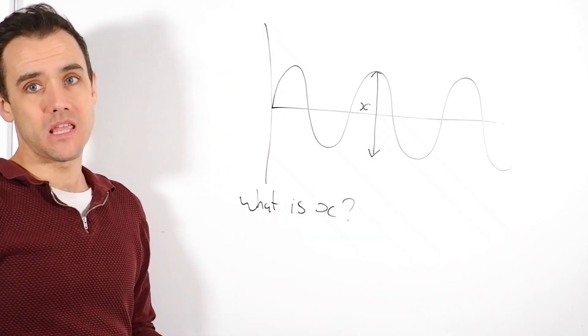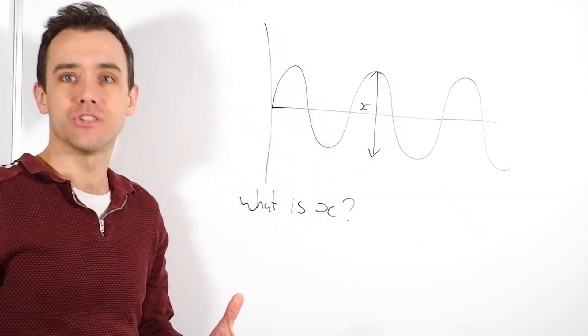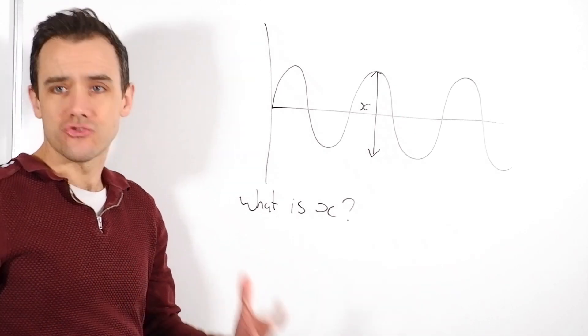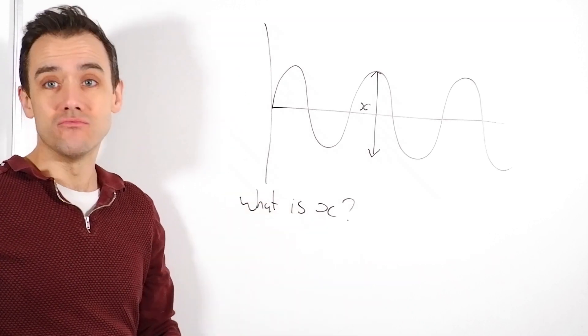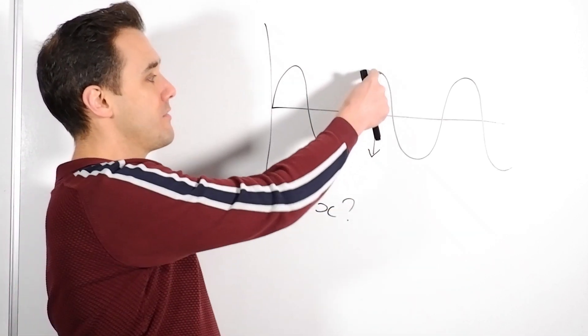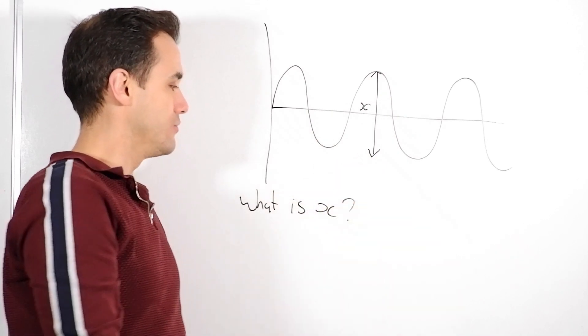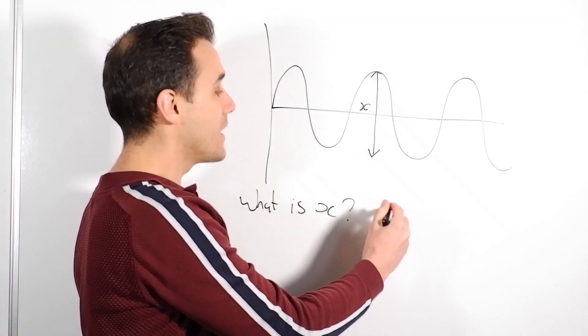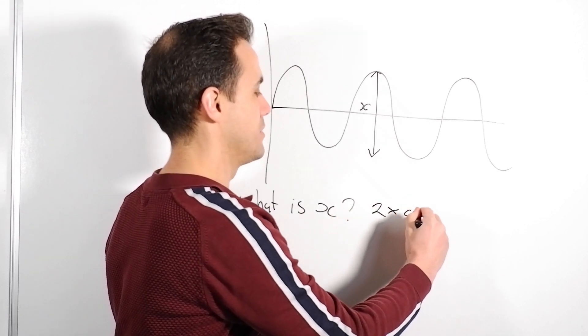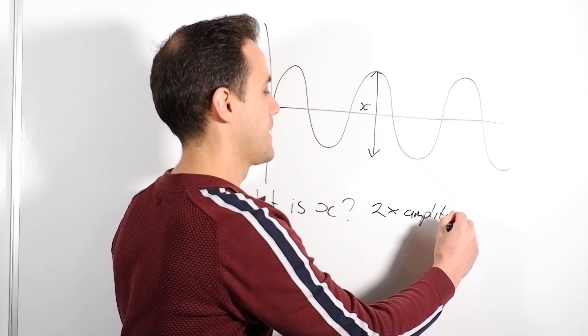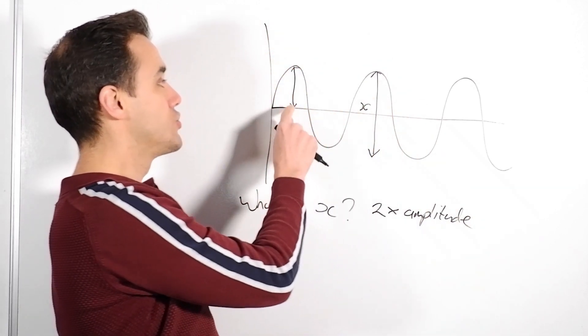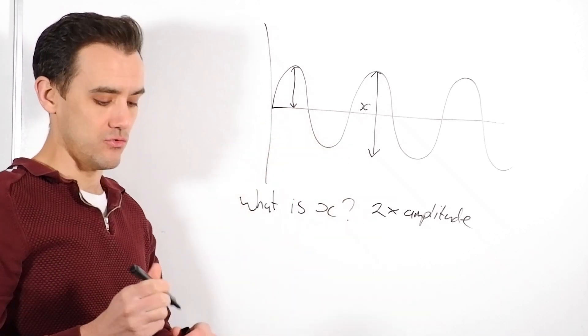Now, most people would make a mistake here and think that x represents the amplitude. And for some people, this is the sort of question where people go, oh, the examiner is trying to trick us. They're not trying to trick you. They're just trying to see if you really understand the basics of waves. And what they've shown you is not the amplitude. What is x? Well, x is twice the amplitude. It's two times the amplitude. So, don't make a mistake there. Remember, the amplitude is just from the top to the central line.